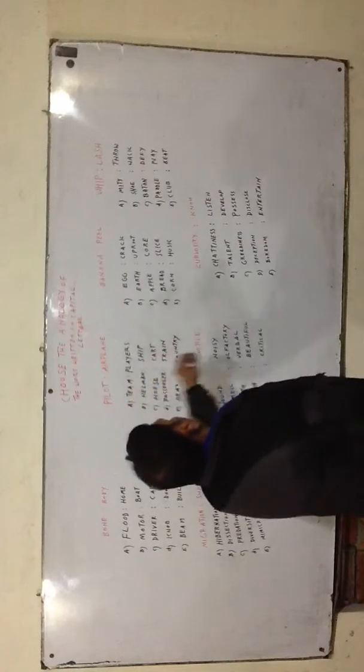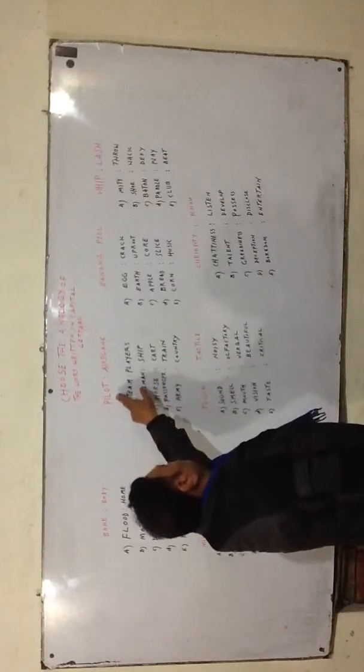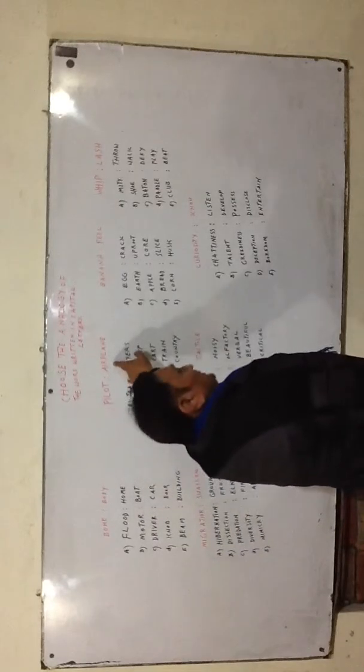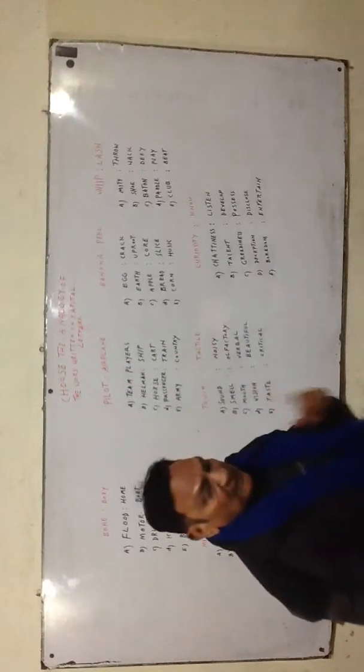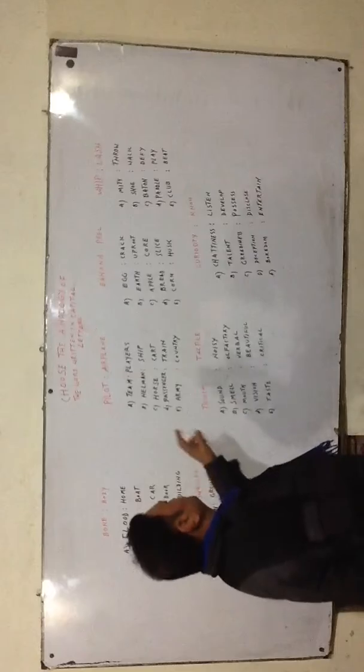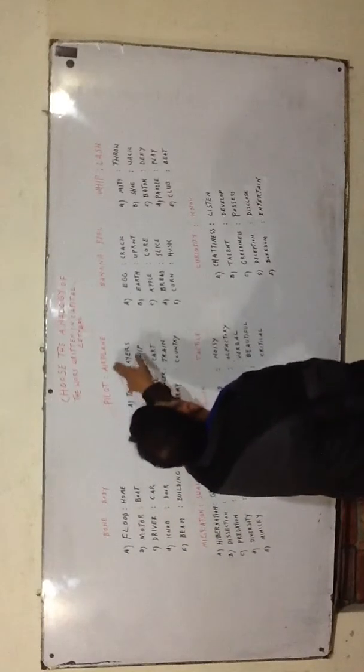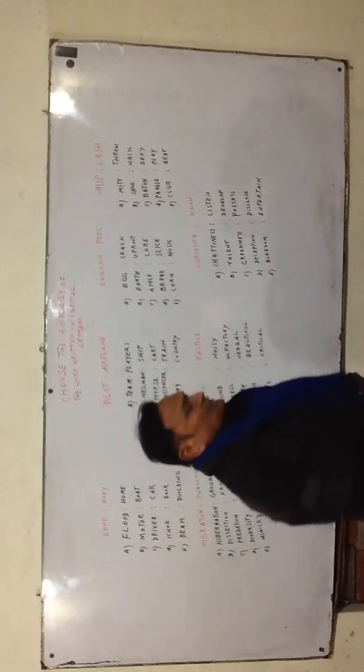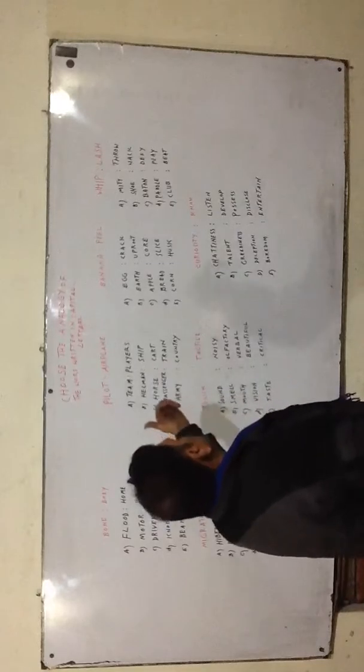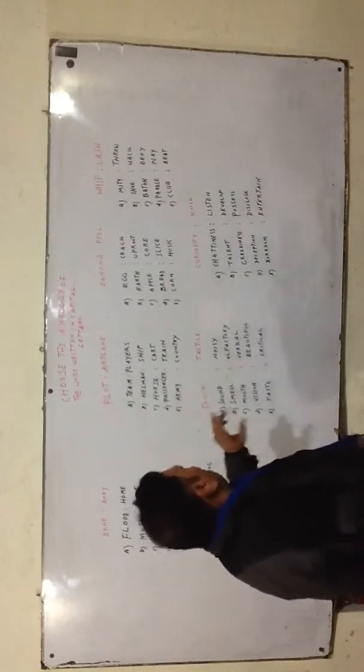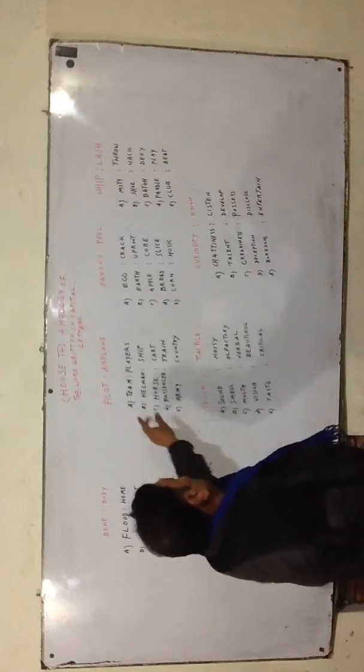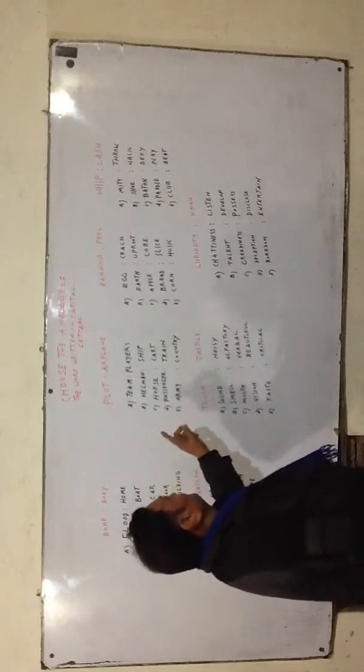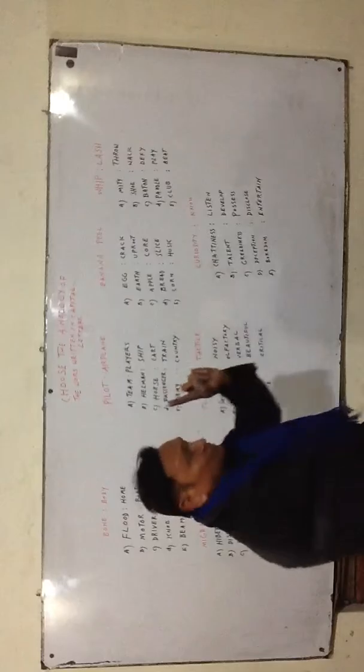Now pilot airplane. You know the very function of a pilot, he tries to operate the aeroplane. The very function of a pilot is to operate aeroplane, or in other words, you can say a pilot flies aeroplane. Now we have five options at our disposal. A team, players. Do you think that we try to operate players? The answer is no.